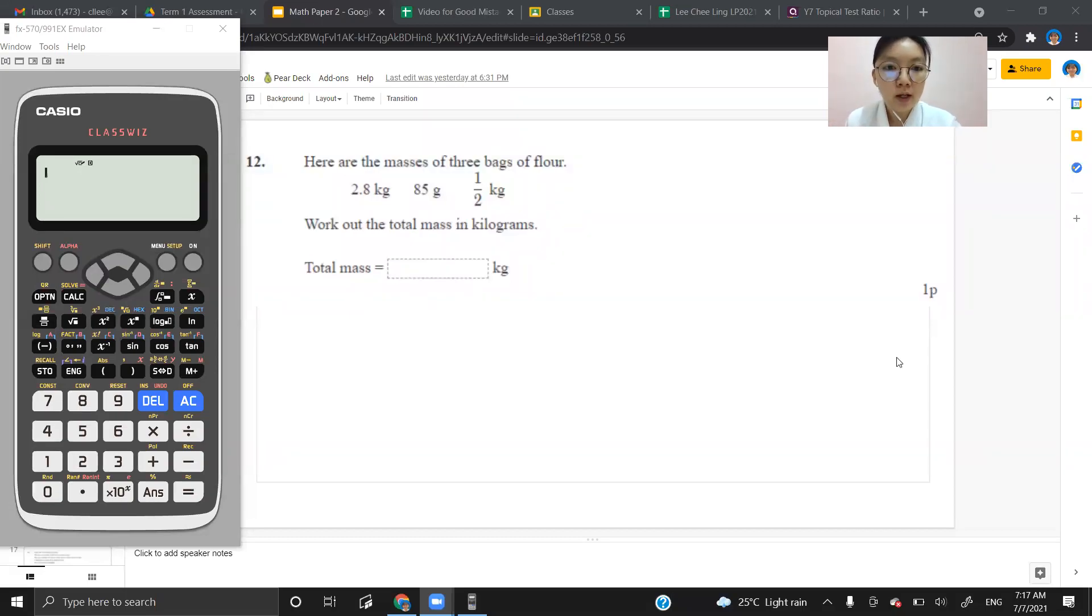Hey there, question 12. Here are the masses of three bags of flour: 2.8 kg, 8.85 g, and half a kg.